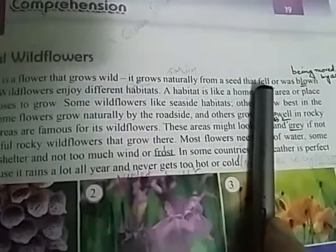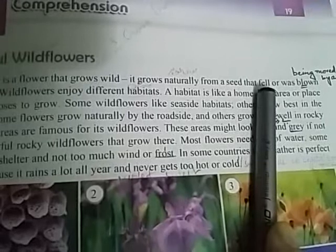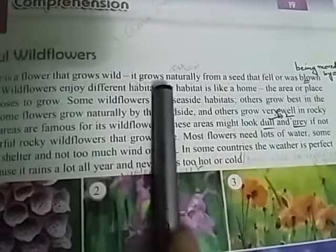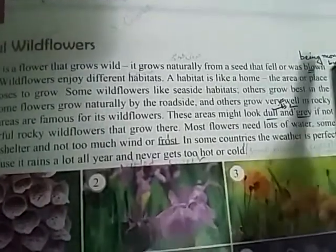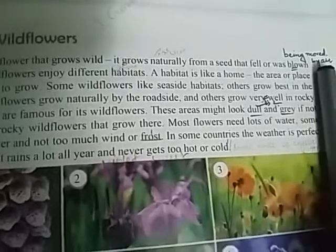That fell or was blown by the wind. Wind means hawa (ہوا). Fell is the second form of fall; fall means girna (گرنا). So the flower grows naturally from a seed that falls or is blown away by the wind — hawa ke zariye door le jaati hai. Blown means being moved by air.